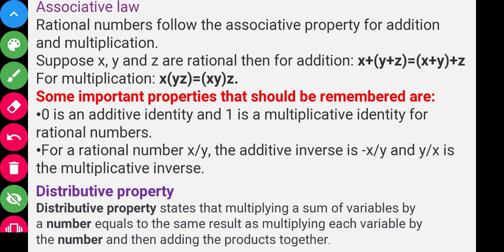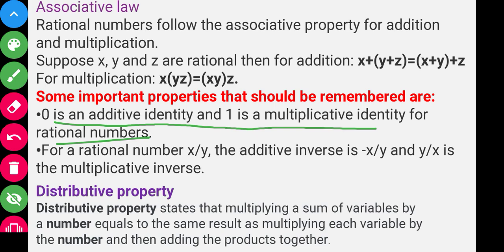Some very important properties to remember: 0 is the additive identity and 1 is the multiplicative identity for rational numbers. Zero is the additive identity because when 0 is added to any number, its value is unchanged. One is the multiplicative identity because when any number is multiplied by 1, its value is unchanged.